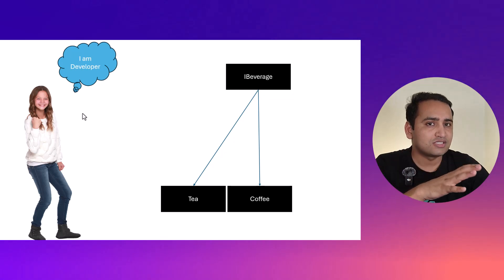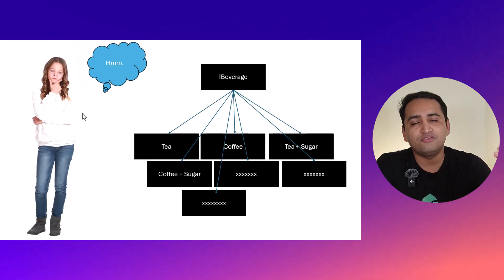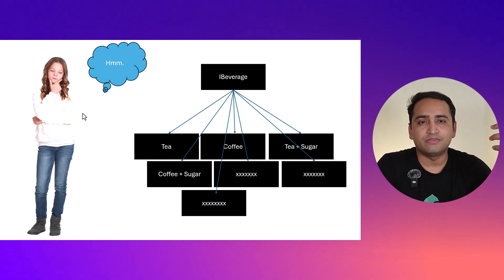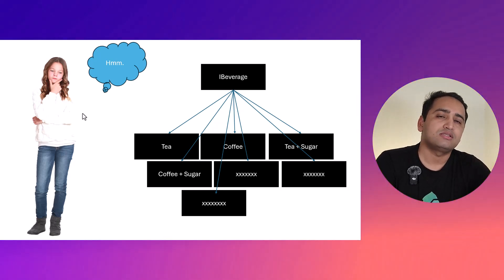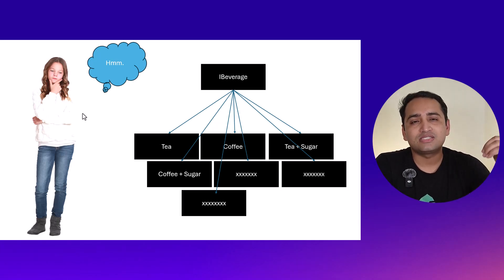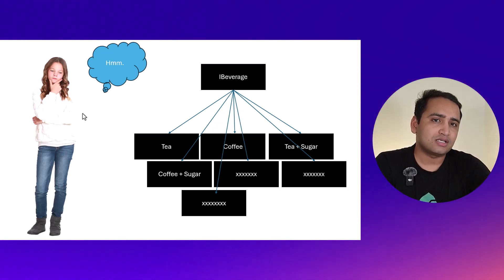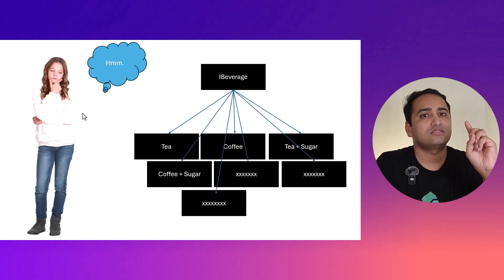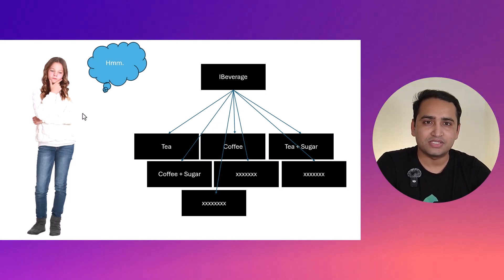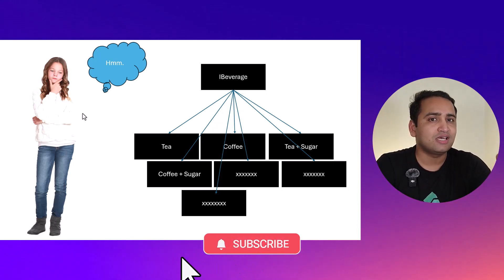Now because everything is working fine and the cafe is doing well, I want to add more functionalities. As of now we are selling only plain tea and plain coffee, but I want to add things like tea with sugar, tea with milk, and tea with other features. Some customers want tea only with sugar, others want coffee with milk. We need all these possible combinations. We have two beverages — tea and coffee — and three additional decorations: sugar, milk, and lemon.